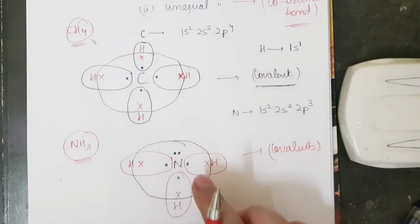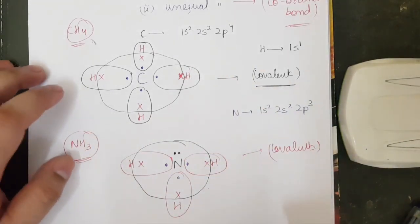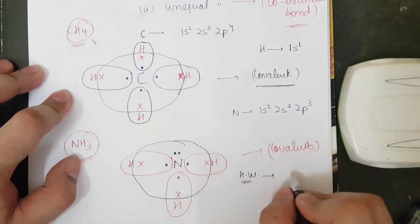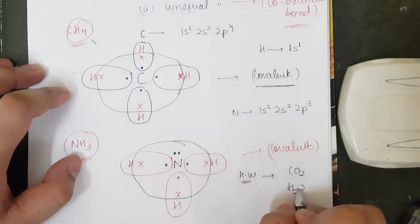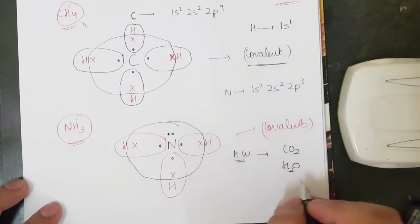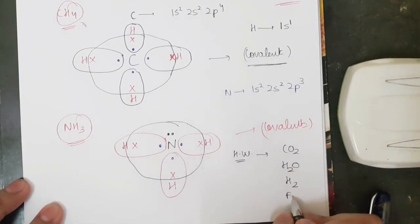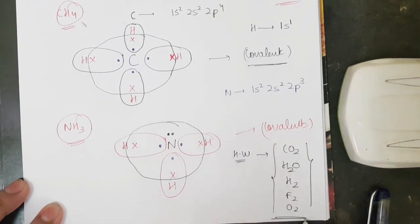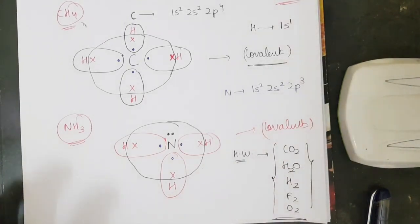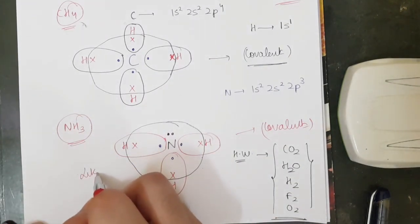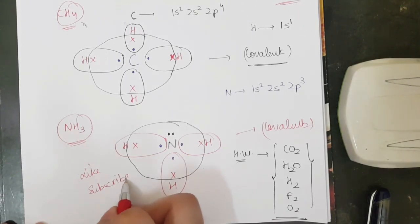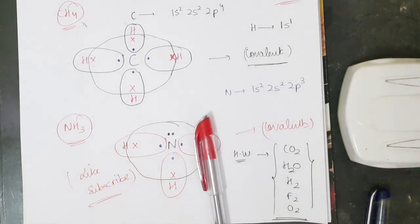For homework, please solve Lewis dot structures for CO2, H2O, H2, F2, and O2 — those are five homework problems. Please mention any doubts in the comment section. Don't forget to like the video and subscribe to the channel, because very good videos are coming. Thank you and all the best. Jai Hind.